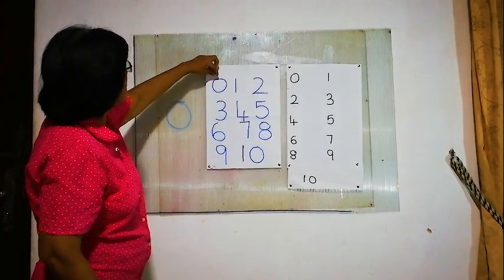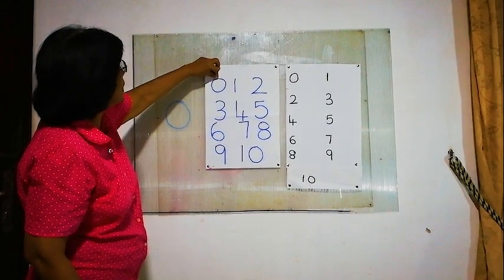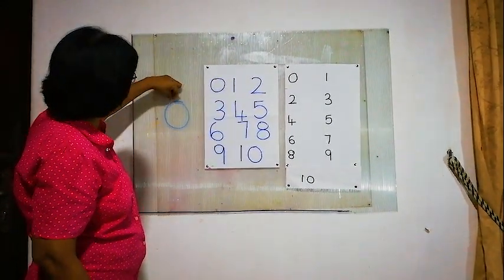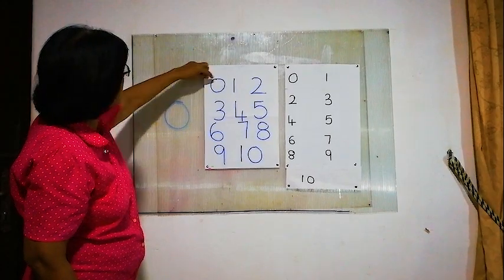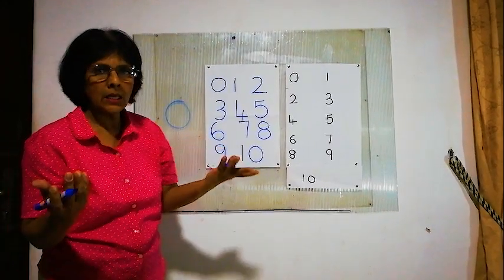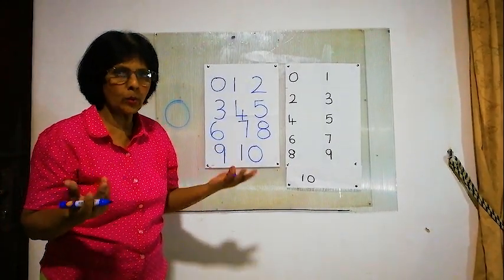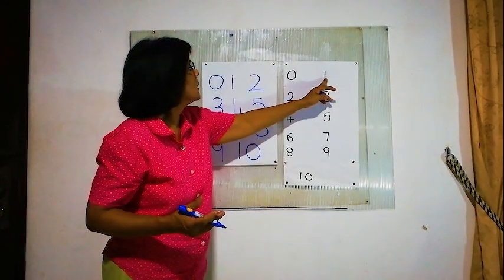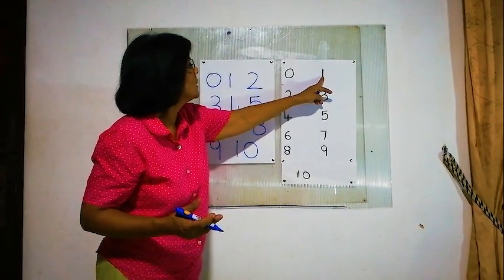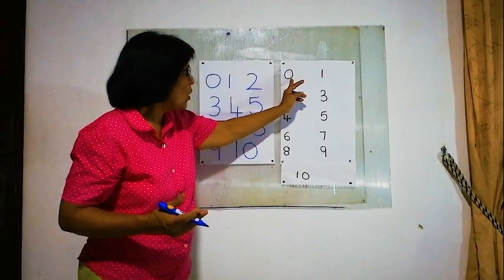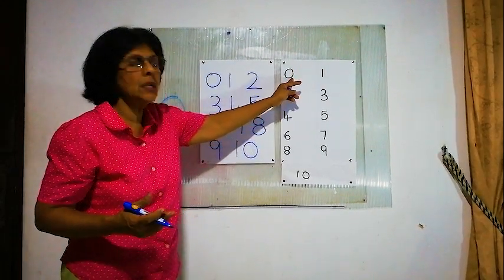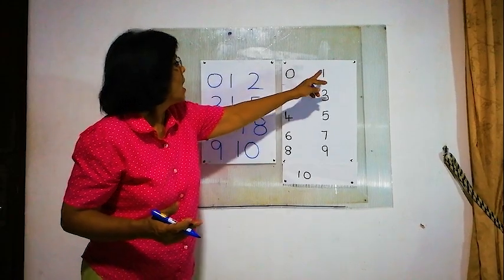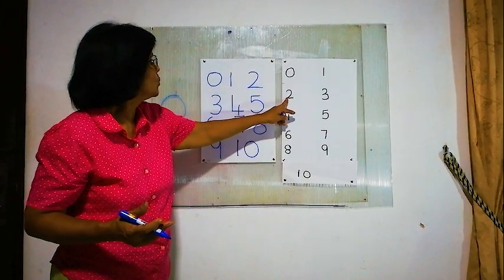Now, the number 0 — the new number we are learning. 0 means nothing, no value. Before number 1 is 0, okay? After 1 is 2.